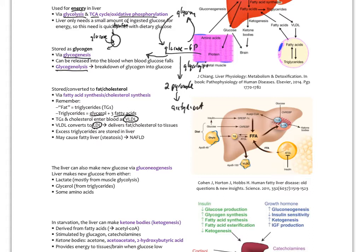Some triglycerides can be stored in the liver, but there's only a certain amount of room. As liver cells become filled with triglycerides, they stop functioning as well, causing liver impairment. This can lead into non-alcoholic fatty liver disease, potentially progressing to non-alcoholic steatohepatitis, cirrhosis, and liver cancer. So this is a potential cause of NAFLD. That's the third fate of glucose in the liver: either as energy, as glycogen, or as fat and cholesterol.